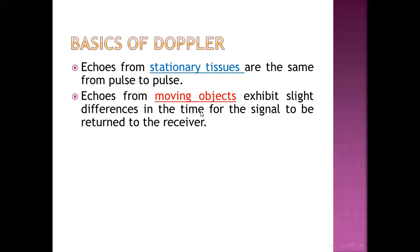Fetal Doppler. Before anything, we should know the basics of Doppler. Echo from stationary tissue are the same from pulse to pulse, like ordinary ultrasonography. But echo from a moving object — Doppler works on a moving object — shows a slight difference in the time for the signal to be returned to the receiver.